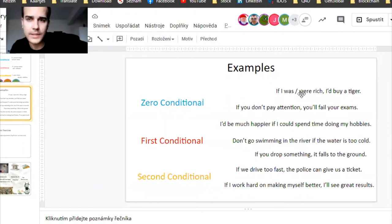You will see there are phrases already—there are some sentences that are full and you will find that these are zero, first, or second conditional. So gentlemen, again I'll put you into rooms for two minutes and try to put the sentences to the correct place. That means if I was or were rich I would buy a tiger. Now is this the first conditional, zero, or the second?